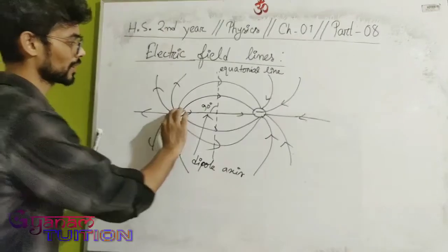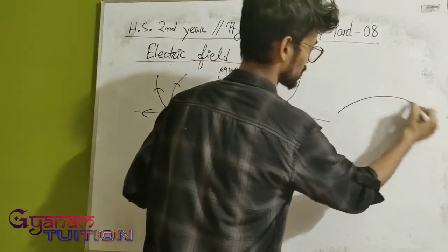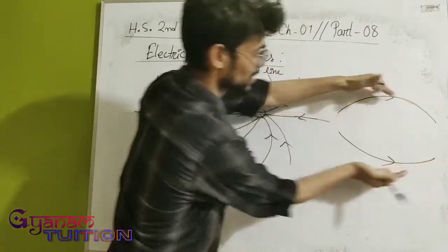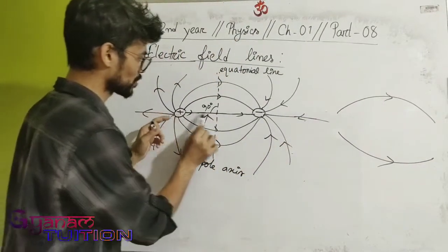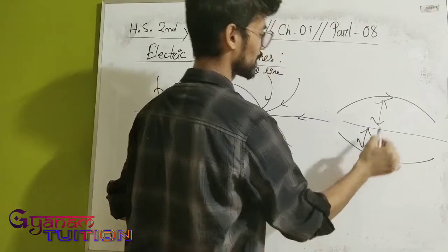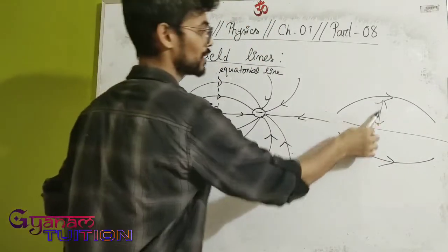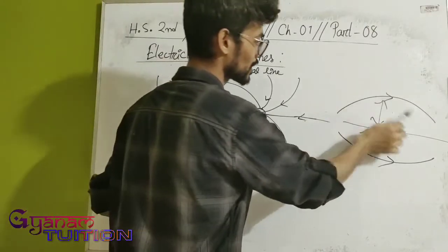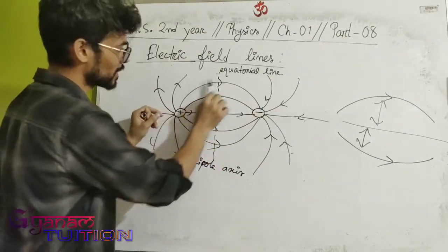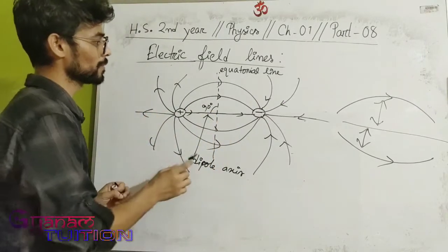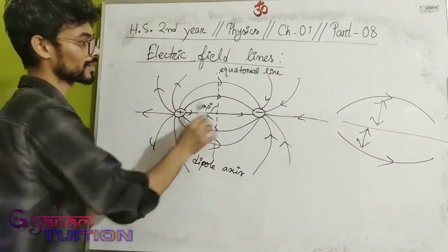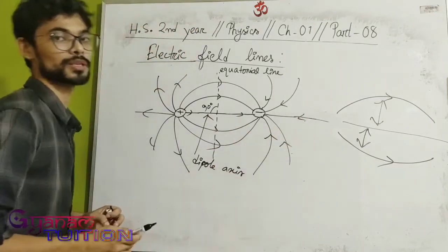The electric field lines of a dipole are cylindrically symmetric about the dipole axis. This means the field lines are symmetrically distributed around the axis, and the pattern is the same on all sides around the dipole axis.